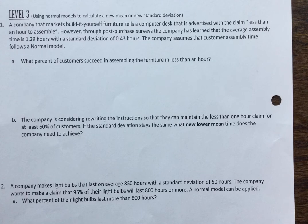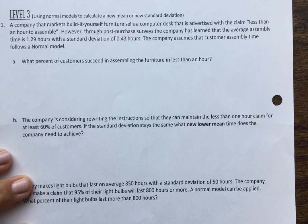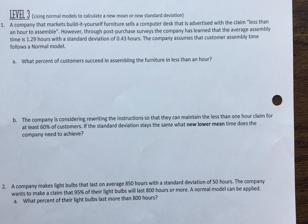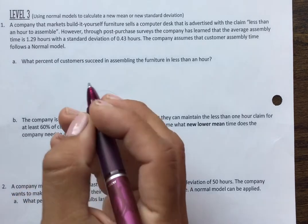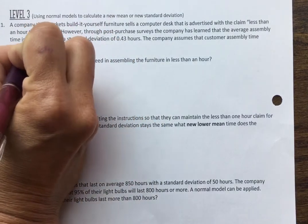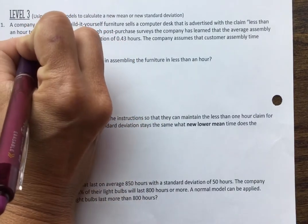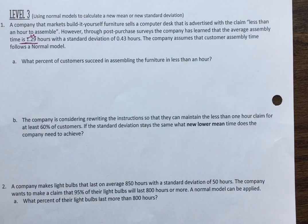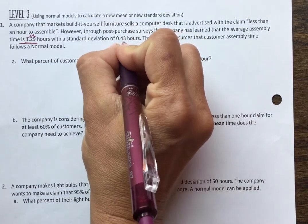The thing I want to stress is that when you are reading a word problem, annotating as you go through is so important and it helps you stay focused. So I'm going to model that here. A company that markets build-it-yourself furniture, like IKEA, sells a computer desk that is advertised with a claim less than an hour to assemble. However, through post-purchase surveys, the company has learned that the average assembly time is 1.29 hours. We were just told that this was the average. I'm going to label that mu with a standard deviation of 0.43 hours.